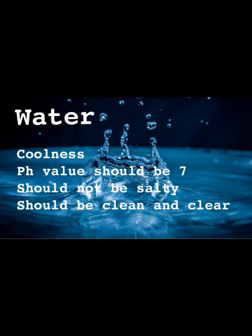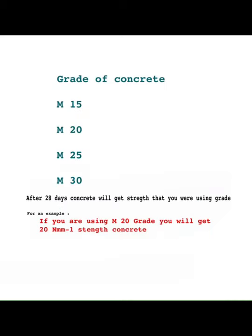Now we will see the grades of concrete. There are a few grades of concrete in construction. The grade of concrete depends on the mixing of materials. After 28 days, concrete will reach the strength corresponding to the grade you used. For example, if we use M20 grade concrete, you will get 20 Newton per millimeter squared strength.